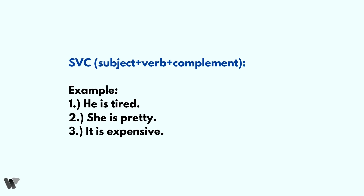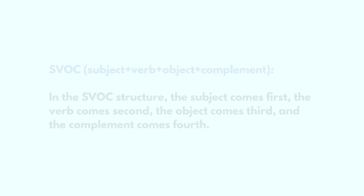Let's use some examples to understand the SVC sentence pattern. The first one is: he is tired. Here 'he' is the subject, 'is' is the verb, and 'tired' is the complement. The next example: she is pretty — same structure. And: it is expensive — again the same SVC pattern.